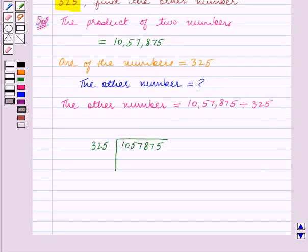So we now divide 1057875 by 325. Now 325 times 3 is equal to 975.